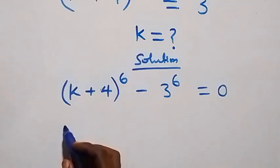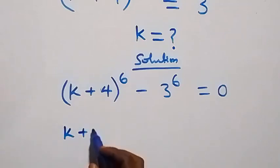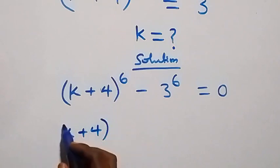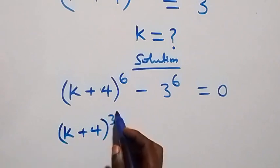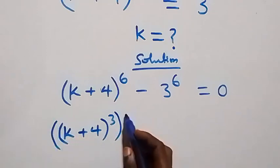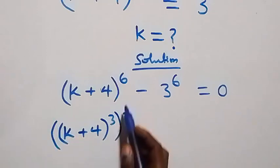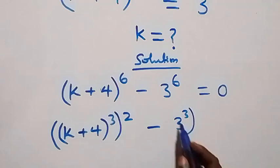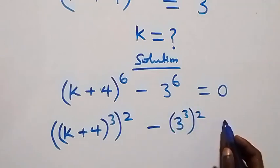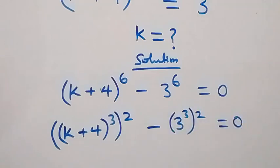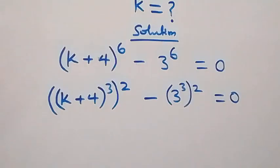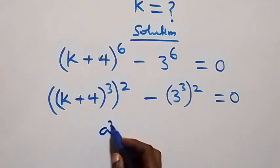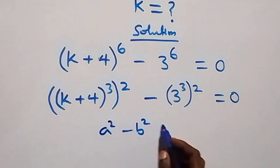From here we can rewrite this as k plus 4 raised to power 3, then raised to power 2 — since 2 times 3 gives 6 — then minus 3 raised to power 3, raised to power 2 as well, equals to 0.